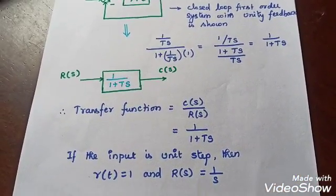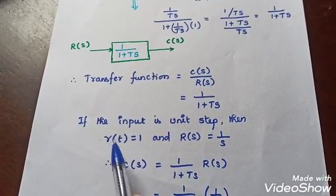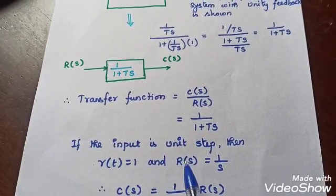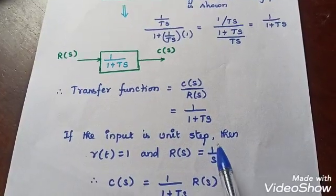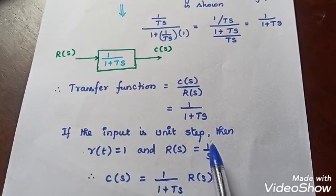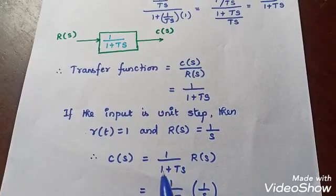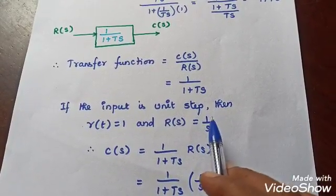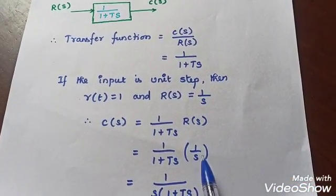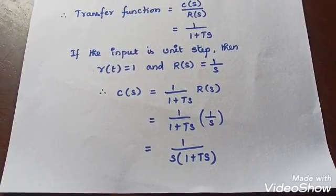Next, we consider the input as unit step. So R(t) = 1, and taking the Laplace transform, R(S) = 1/S. Therefore C(S) equals 1 divided by (1 + TS) multiplied by R(S). Substituting R(S) = 1/S, we get C(S) = 1 divided by S·(1 + TS).